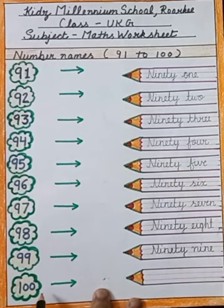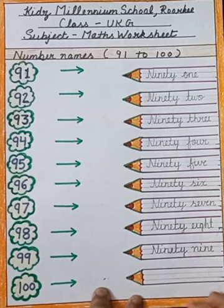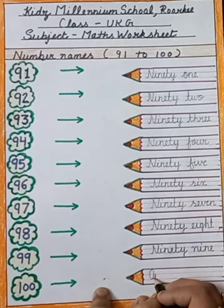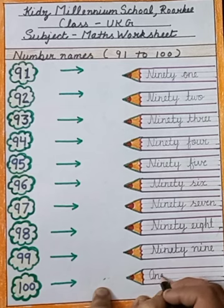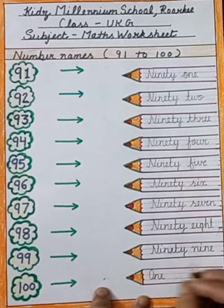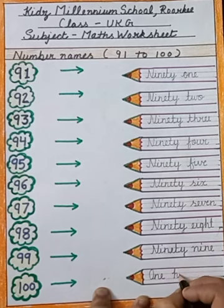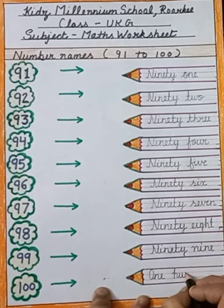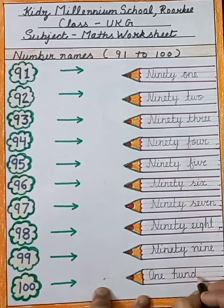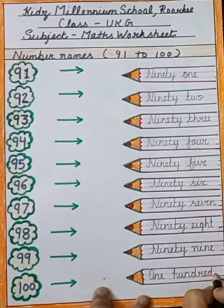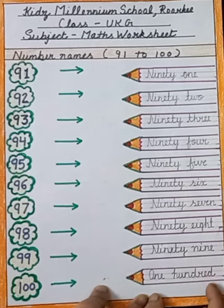Now next one is 100. Spelling is O-N-E, one, H-U-N-D-R-E-D, hundred. 100.